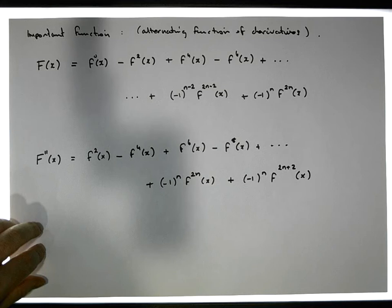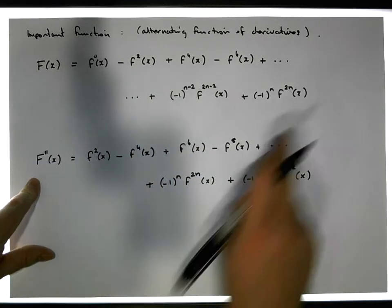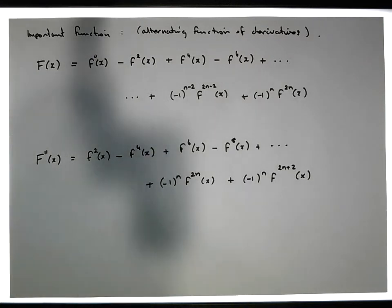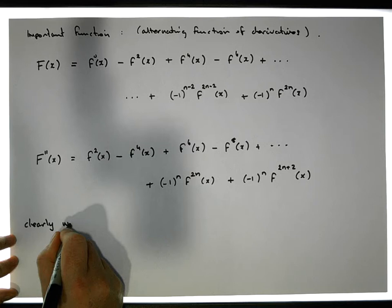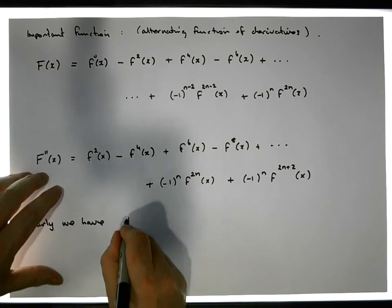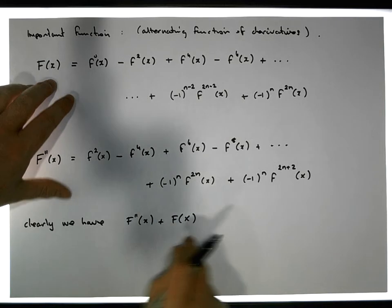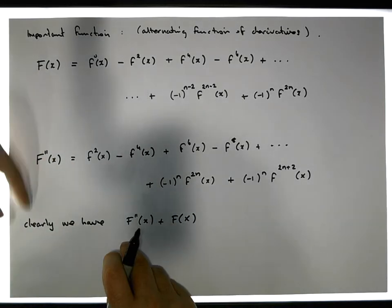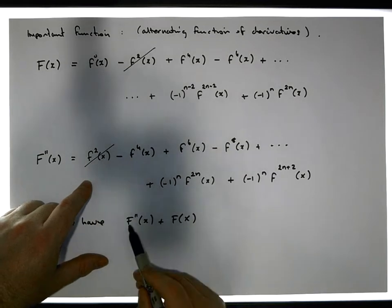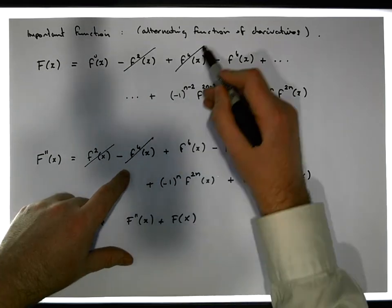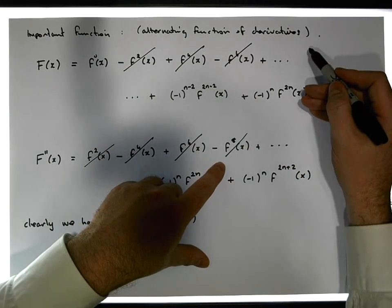This gives us our second derivative of this particular function defined a moment ago. What we're going to do is add these two functions together. We have F double prime of x plus F of x — uppercase F of x. When we add these two things together, this term cancels with this term, this cancels with this, and so on — each term cancels with the next one.